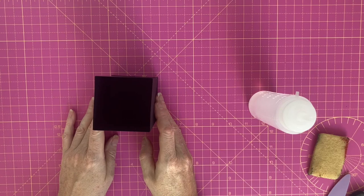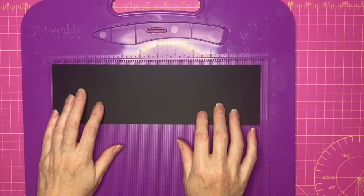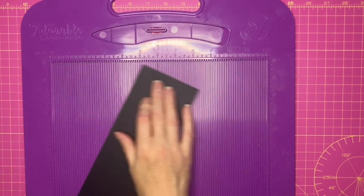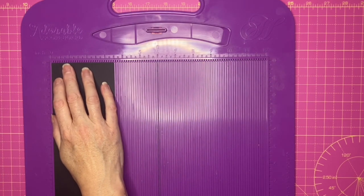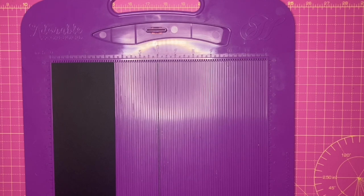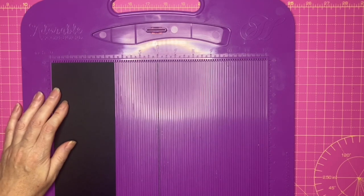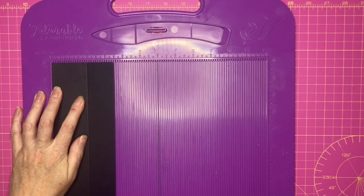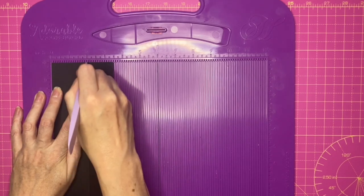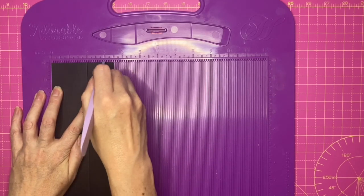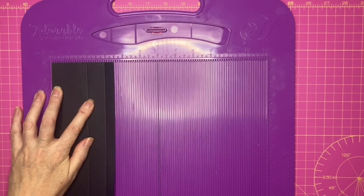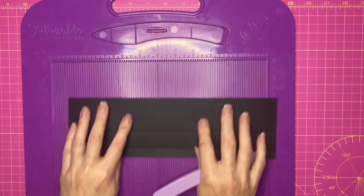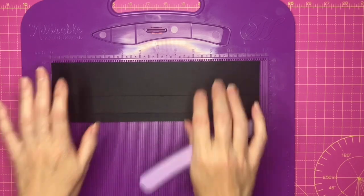So now we'll go on to make the lid. For the lid again I'm using a full width of A4 by three and a half inches. Along the three and a half inch side I'm going to score at two and three. I'm going to place my card back in.